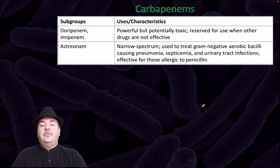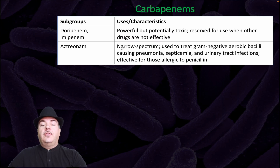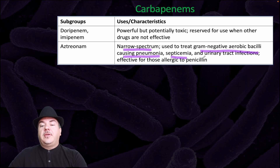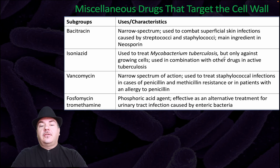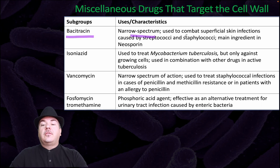We have carbapenems, some of which are powerful but potentially toxic, so they're reserved for use when other drugs are not effective. Others have very narrow spectrum, used to treat gram-negative aerobic bacilli, which cause pneumonia, septicemia, and urinary tract infections. They're effective for those allergic to penicillin. Bacitracin is narrow spectrum, used to combat superficial skin infections caused by streptococci and staphylococci — it is the main ingredient in Neosporin.